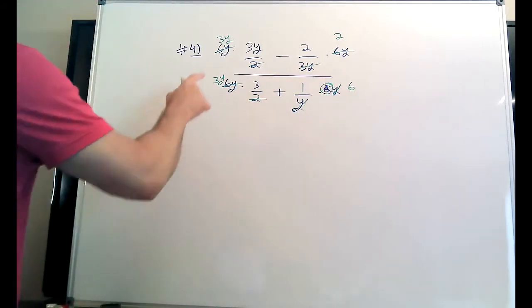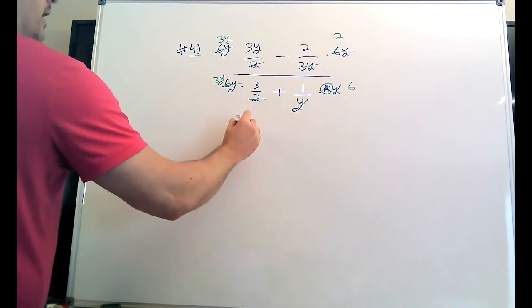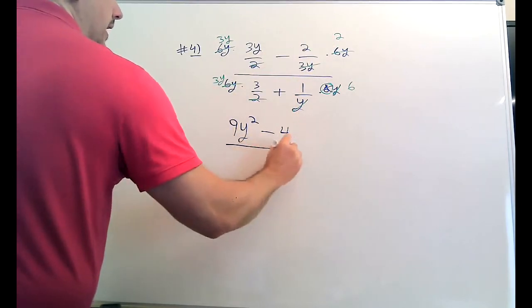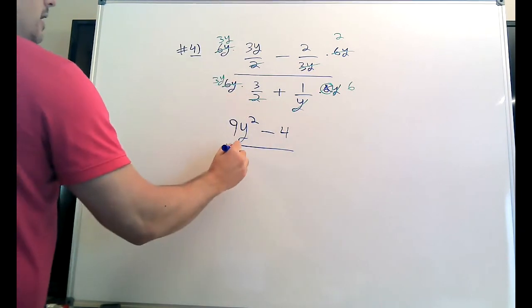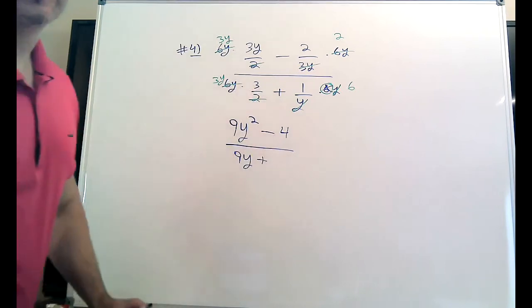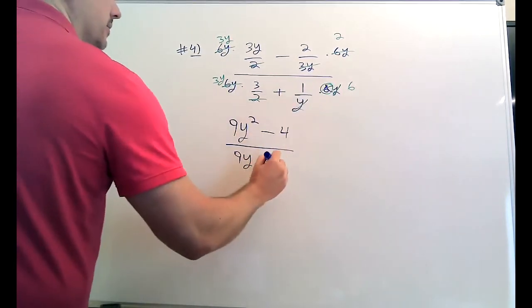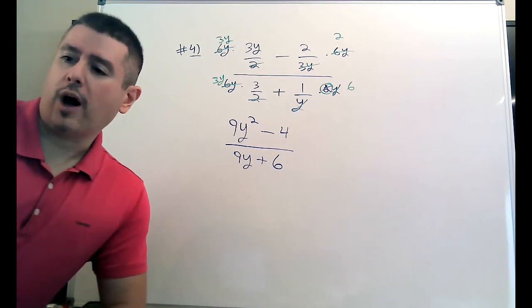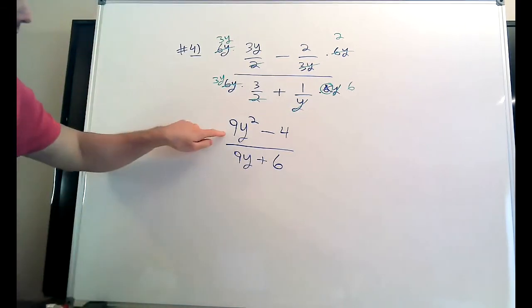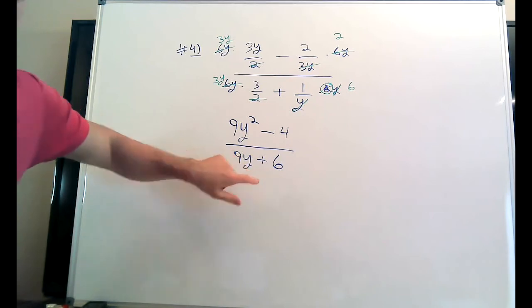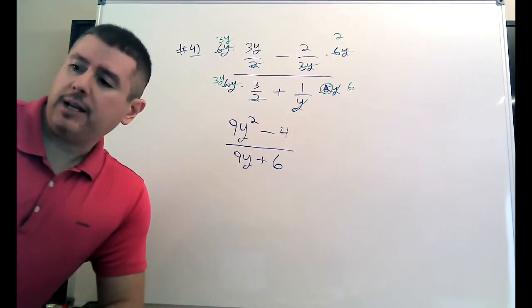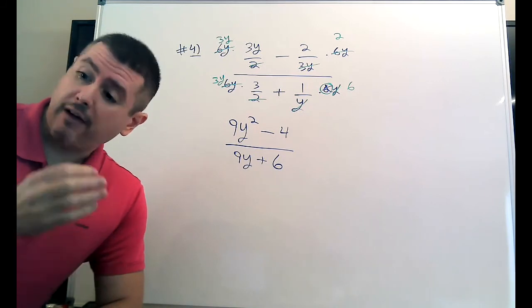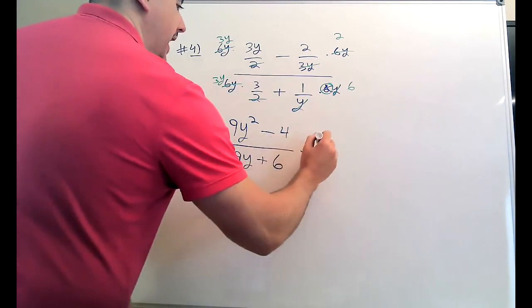Now multiply very carefully. Three Y times three Y: three times three is nine, Y times Y is Y squared. Minus two times two is four. Then three Y times three is nine Y, plus one times six. So you have nine Y squared minus four on top — that's a difference of perfect squares. Nine is a perfect square, four is a perfect square, and you subtract them. On the bottom though, you can't factor it the same way, but you have a nine and a six — they're both divisible by three, so they have a common factor you can remove.